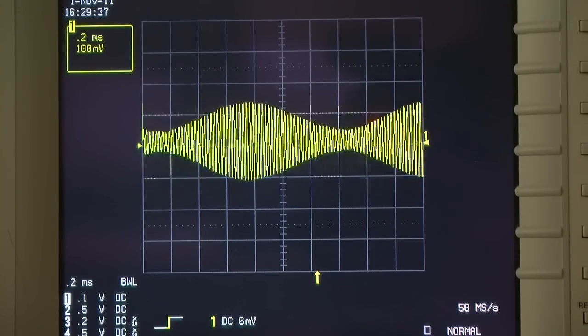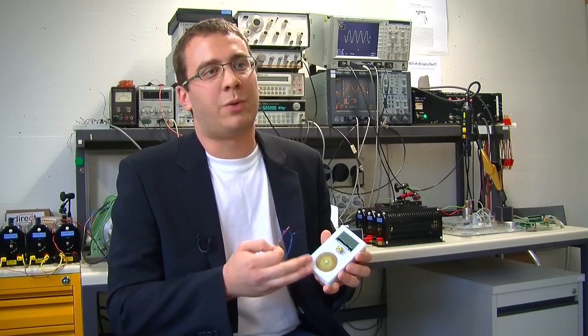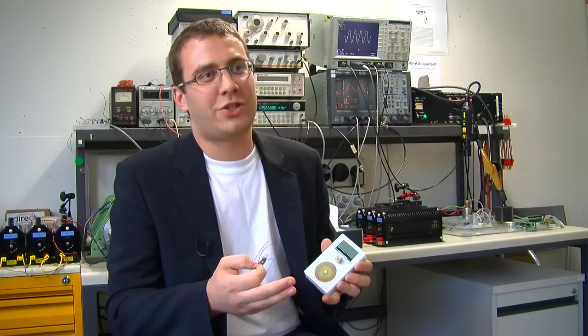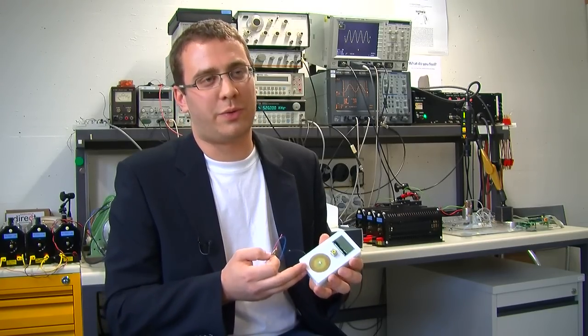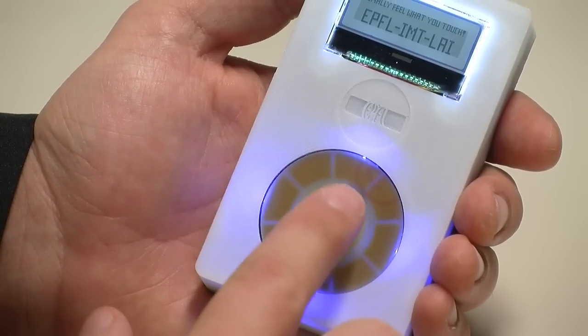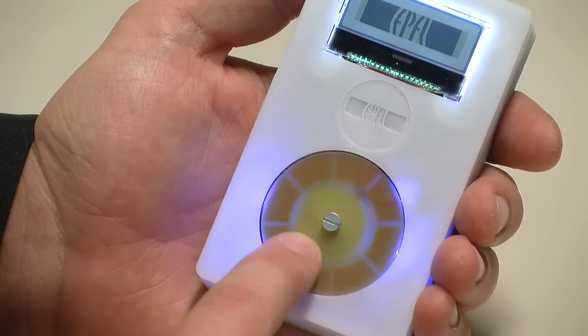When I put a driving signal in my actuator, I have motion on it. With this motion, we can change the friction coefficient that we feel, and we can pass from normal friction of the surface between the finger to a frictionless contact.